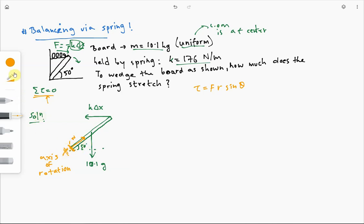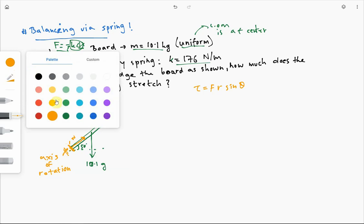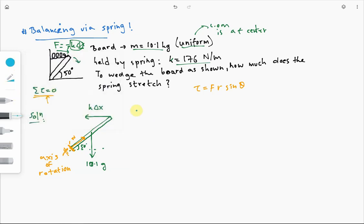So, it's easier to cancel out this unknown force by selecting the axis of rotation here. Alright? That's a trick. Now, let's get back to building out our equation. Okay. So, the equation is summation of torque is equal to zero about our chosen axis, x. Now, what are the forces that are causing a torque or may cause a torque about x? This weight and this spring force.